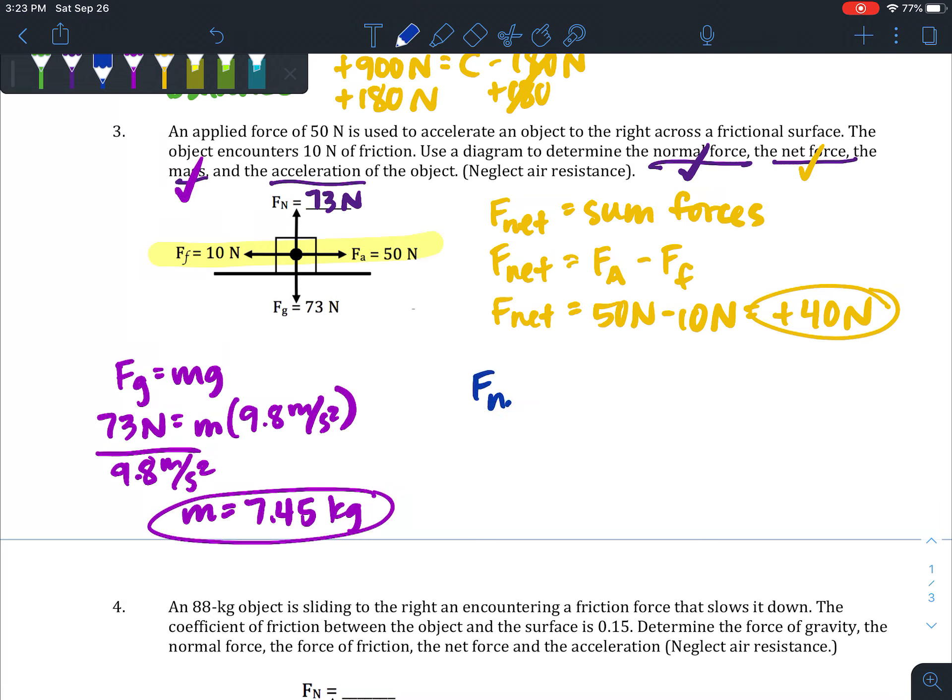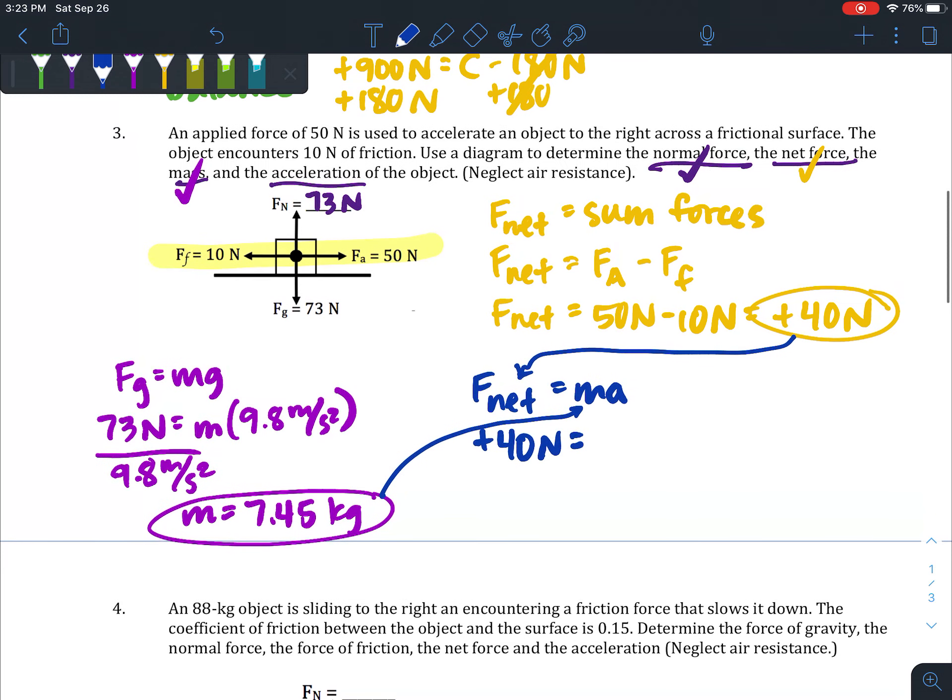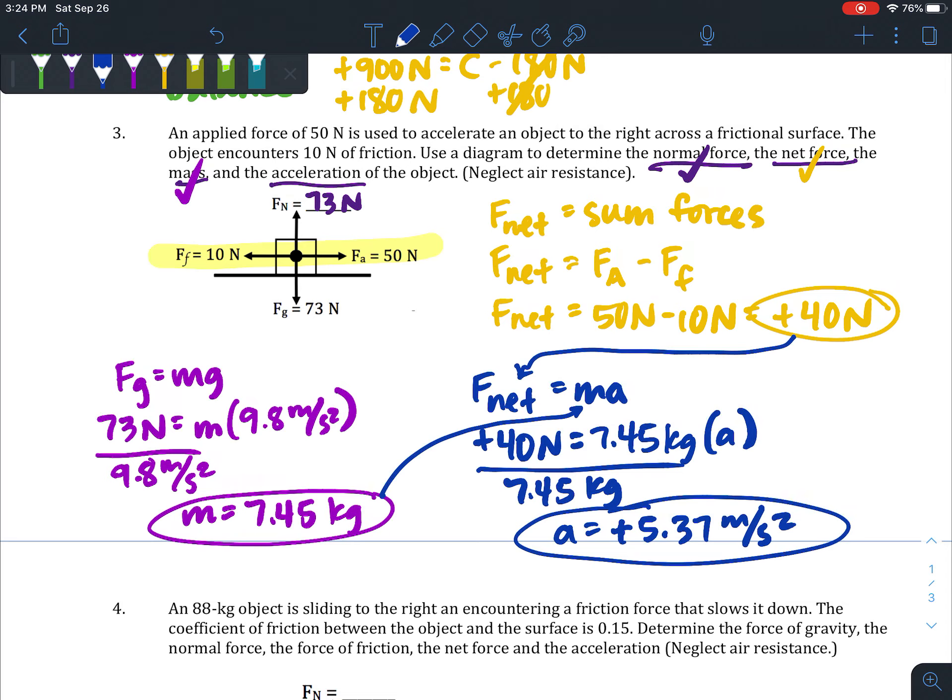The last question is the acceleration of the object, so I'm going to use Newton's second law to solve for that: F_net = ma. I can pull the F_net from 40—that's what I solved for earlier—and then I can pull the mass from the third thing I looked at. Then I can solve for a by dividing by that mass. When I do that, I get an acceleration equal to positive 5.37 meters per second squared. I always want to check: does my answer seem logical? My object is accelerating to the right, so a positive acceleration makes sense.